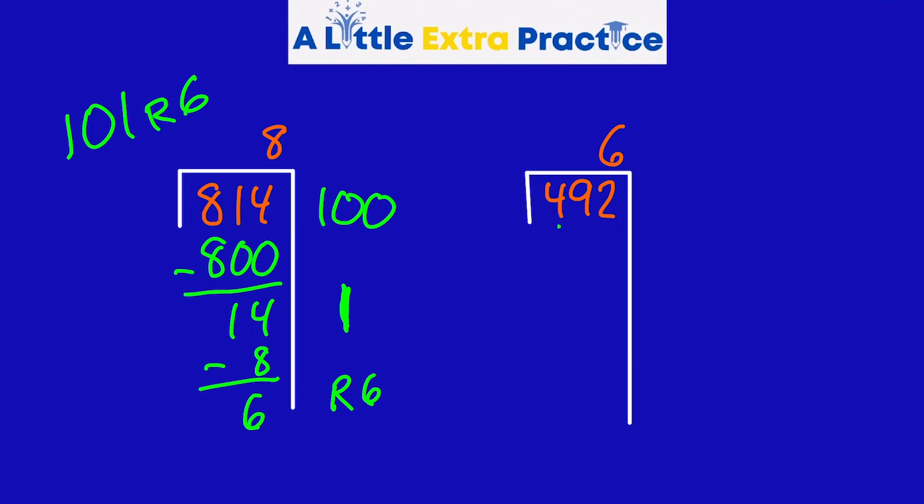This next one. 6 times 8 is 48. 6 times 80 is 480. Subtract and I get 12. 6 times 2, of course, is 12. No remainder. And my quotient over here is 82.